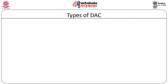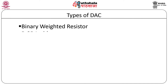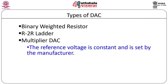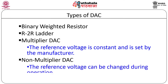To convert a digital signal into equivalent analog voltages, there are different methods. Primarily, there are two methods: the binary weighted resistor method and the R2R ladder network. Besides that, there are two more modifications. In multiplier DAC, the reference voltage is constant and set by the manufacturer. Whereas in non-multiplier type DAC, the reference voltage can be changed during operation.